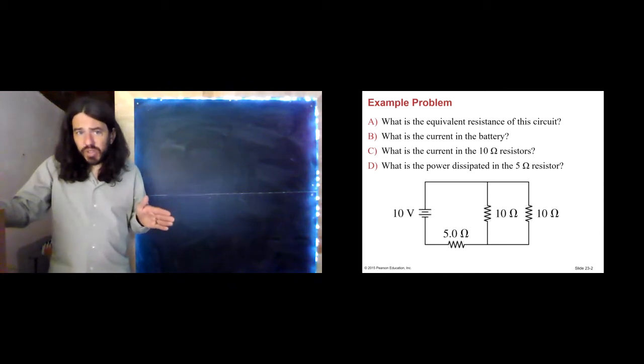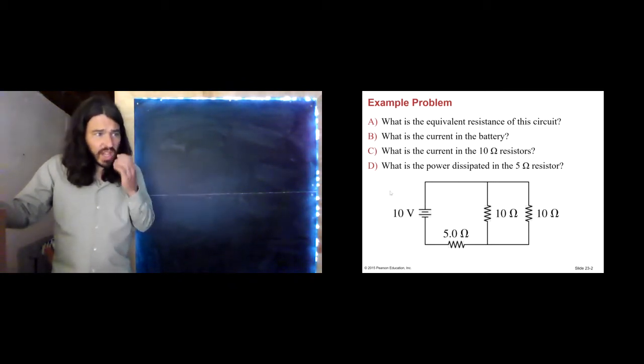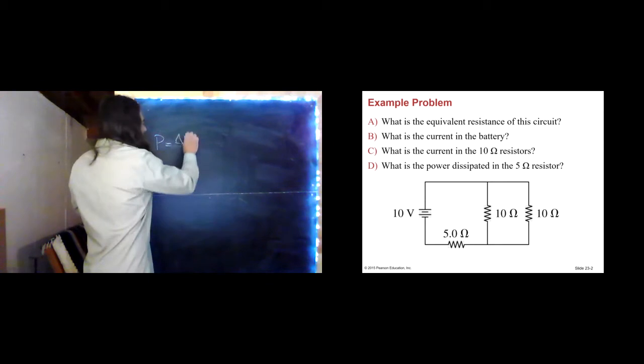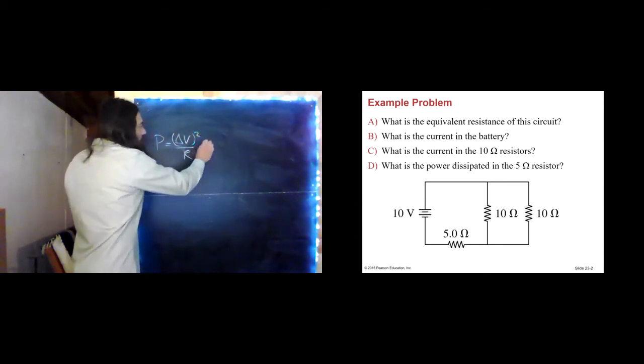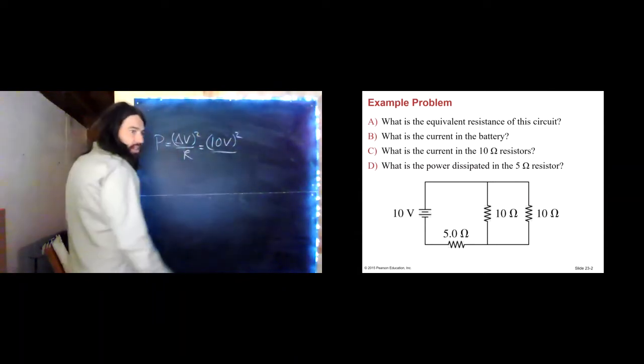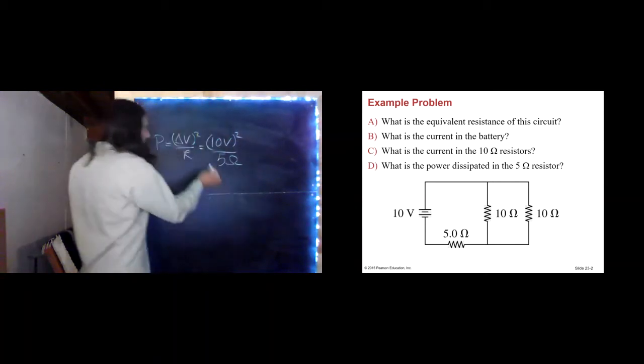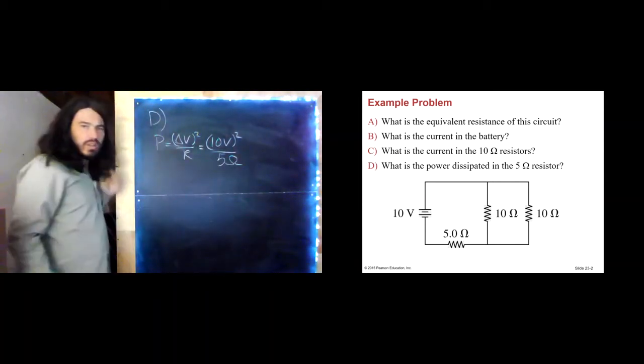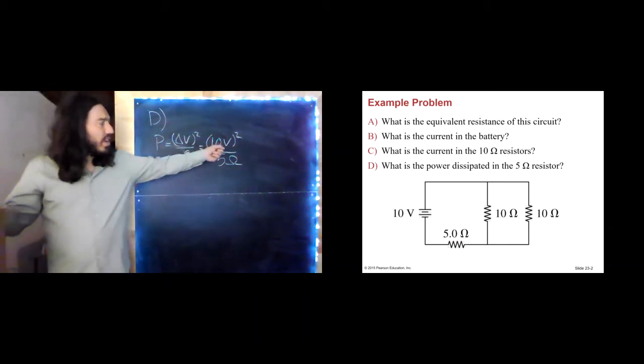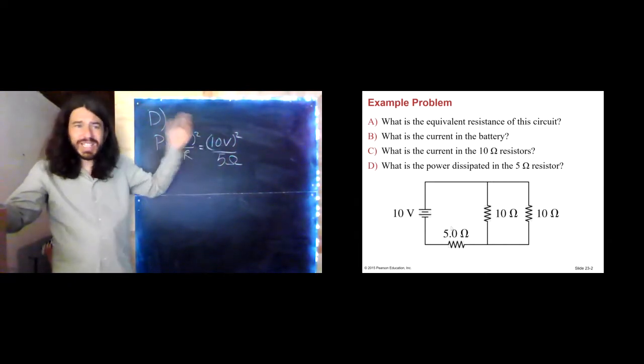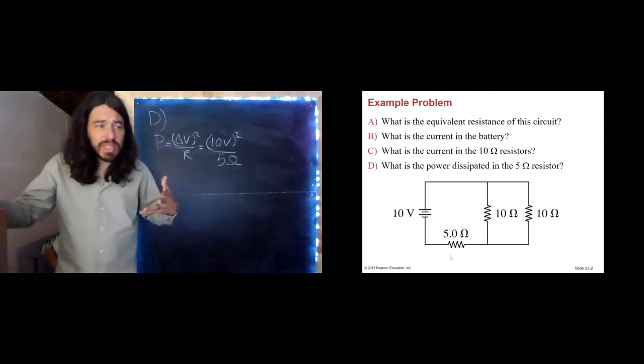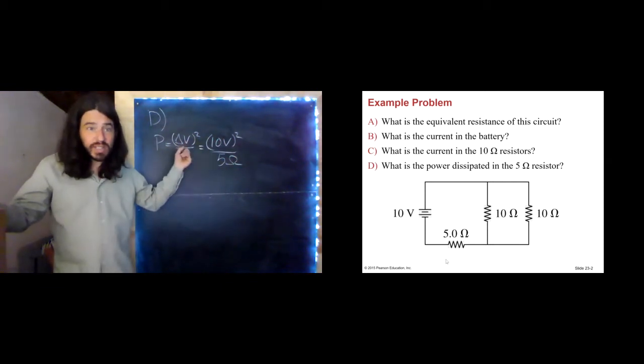So the first thing that I want to do is just show you what not to do. A lot of students, if I ask what's the power dissipated in the 5 ohm resistor, would just jump right to here. They'd say, oh, power is equal to delta V squared over R. Oh, I know what that is. My delta V is 10 volts squared, my resistance is 5 ohms. So this is an incorrect solution to D. Well, what's wrong with that? What did I do wrong there? Well, because this is not the potential that's applied across the 5 ohm resistor.